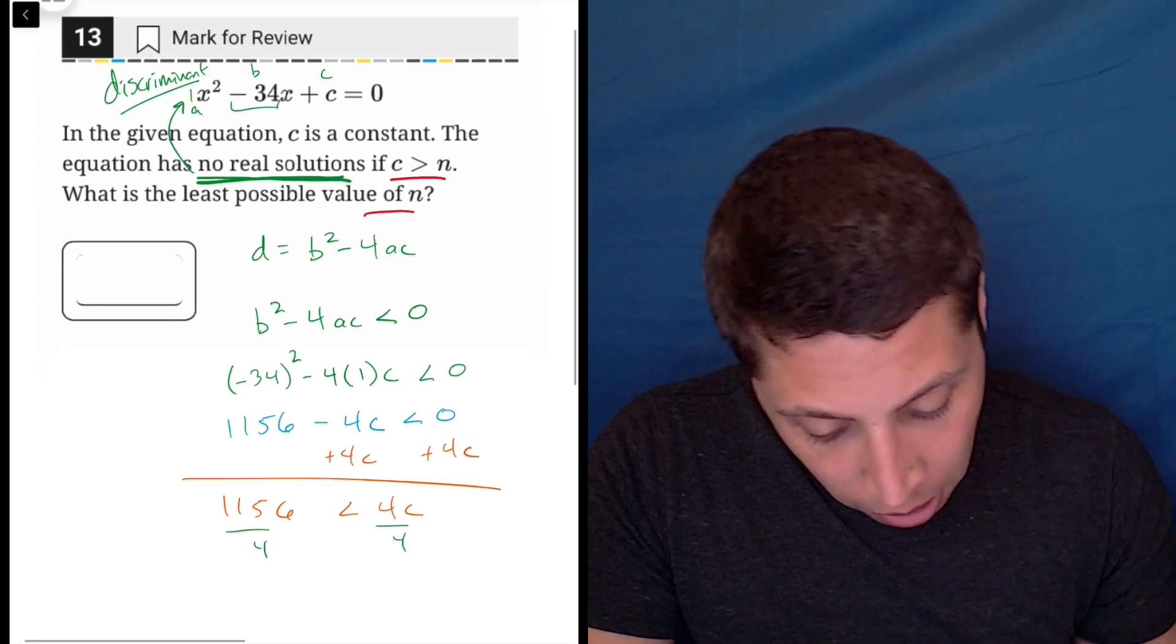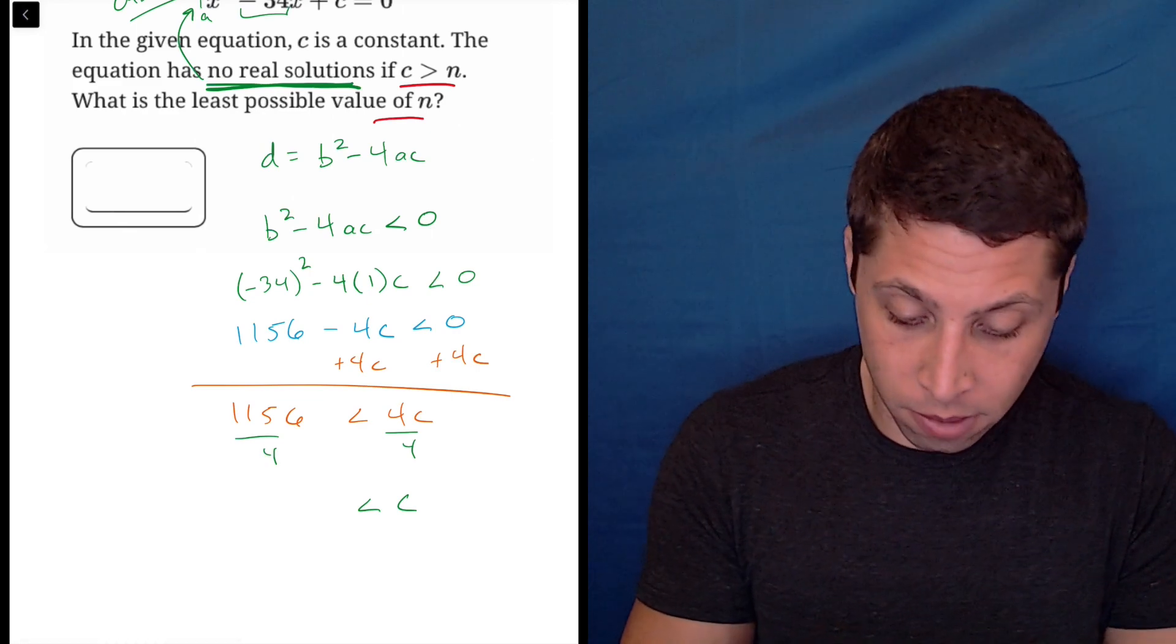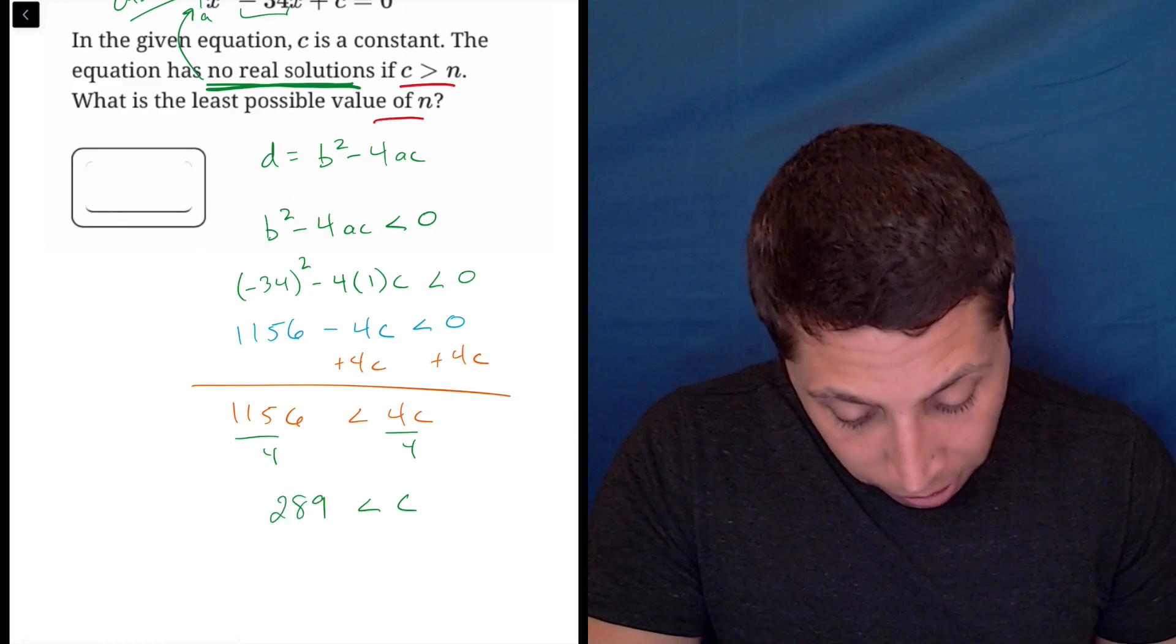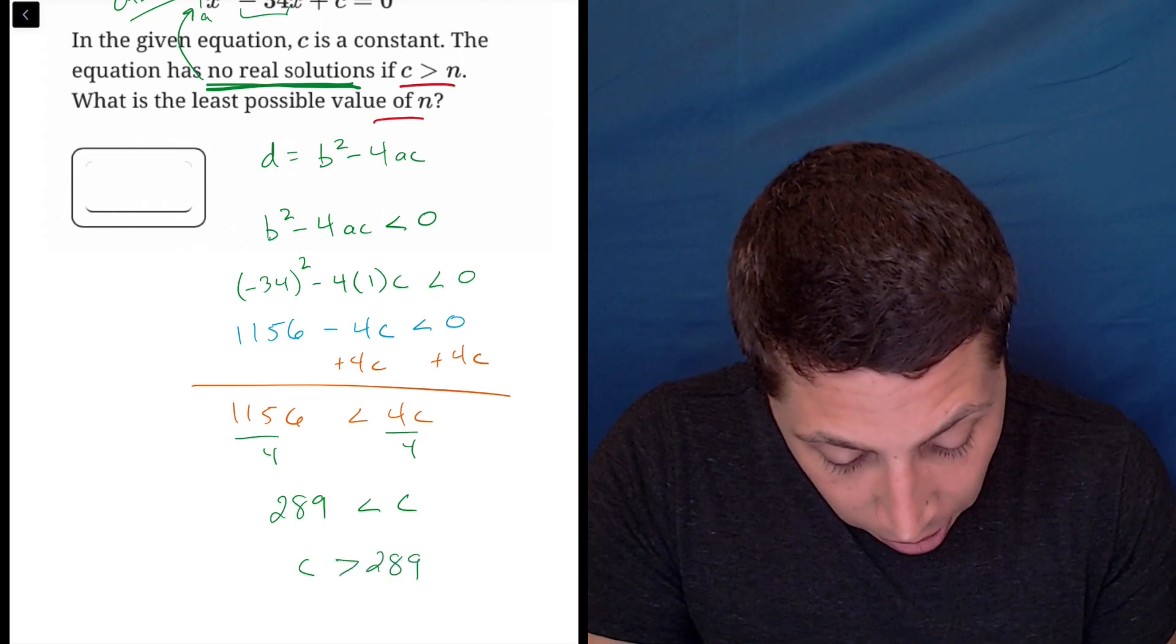Divide by 4, and we're going to get c is greater than, divided by 4, 289. Okay, let me rewrite that so it's a little clearer. c is greater than 289.